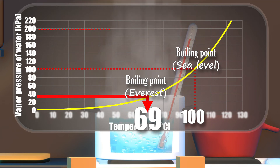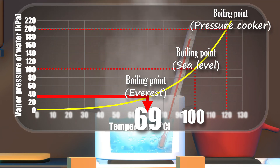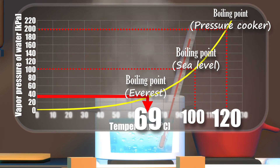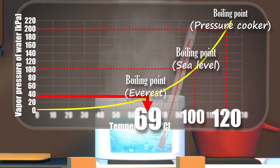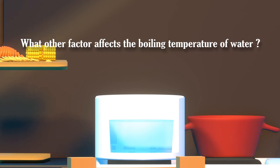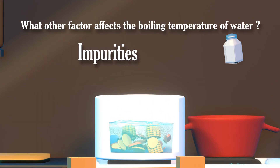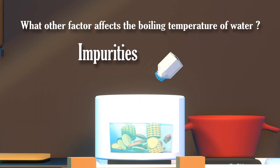If the pressure is increased, as in a pressure cooker, the boiling point is higher than 100 degrees Celsius, cooking the food faster. The boiling temperature is also raised to above 100 degrees Celsius if there are any impurities, such as salt or another ingredient.